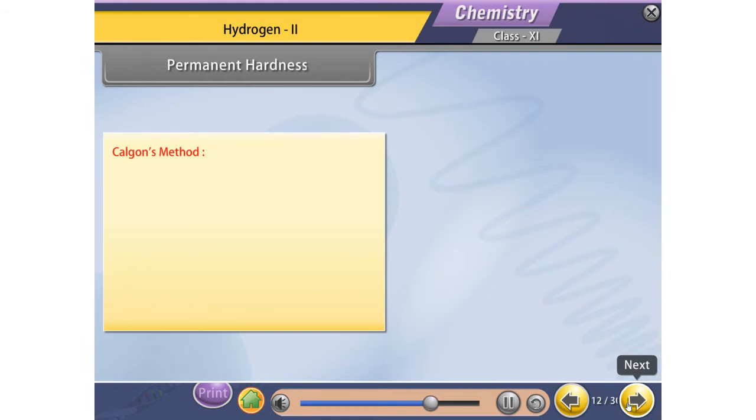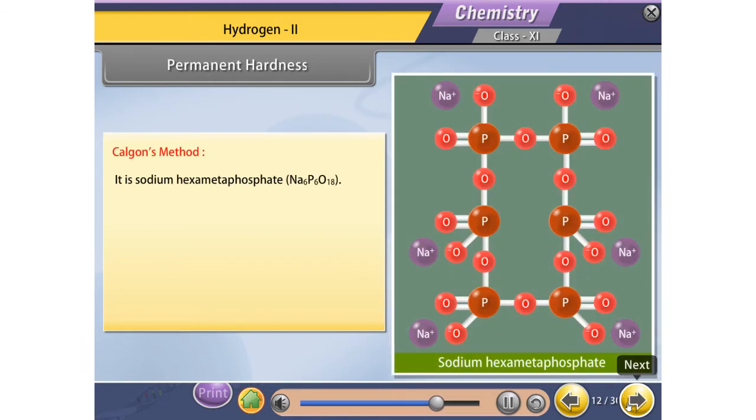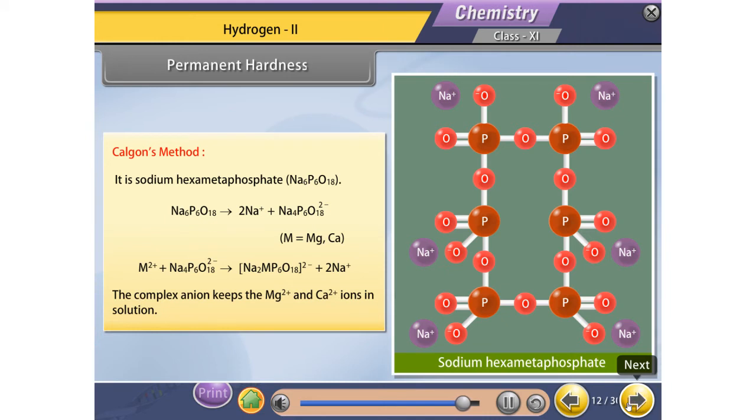Calgon's method: It is sodium hexametaphosphate. The complex anion keeps the Mg2+ and Ca2+ ions in solution.